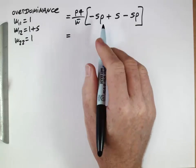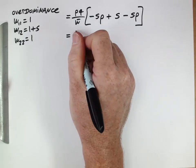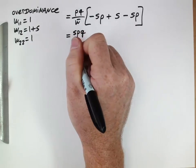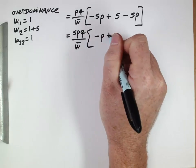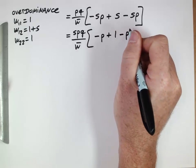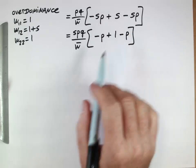So grouping these together, we have an S in all three of those. So that's SPQ over W bar. So that gives us negative P plus 1, negative P. So that's 1 minus 2P.